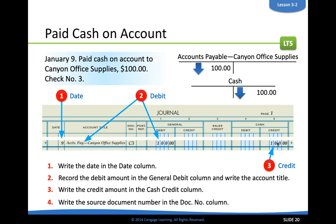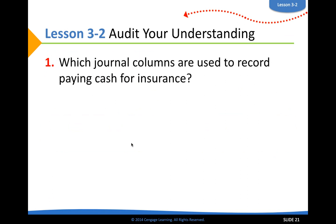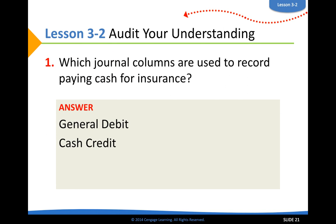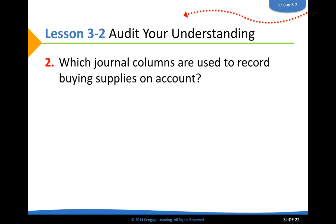This was check number three that Delgado Web Services wrote to Canyon Office Supplies to pay off some of that owed debt, so the source document is C3 under the document number. And that's it for lesson 3.2 — just getting more practice with different types of transactions.